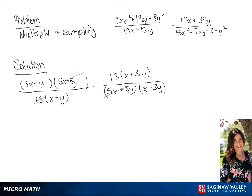Now we can simplify. Our final answer is going to be 3x squared plus 8xy minus 3y squared all over x squared minus 2xy minus 3y squared.